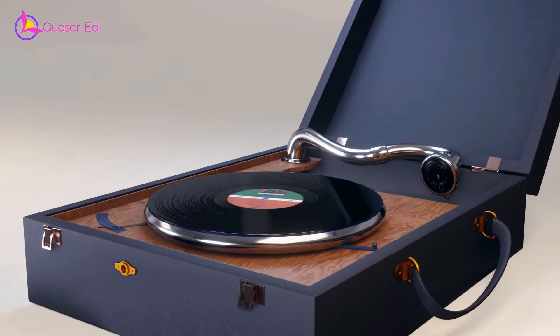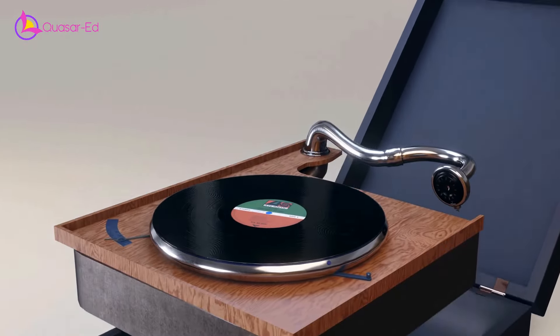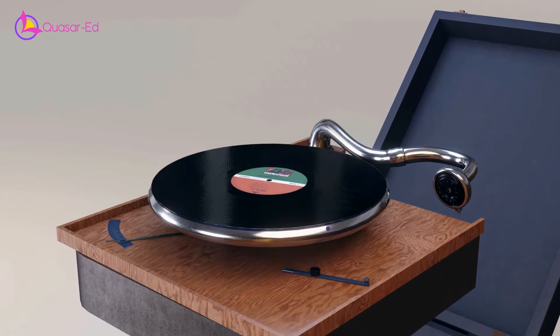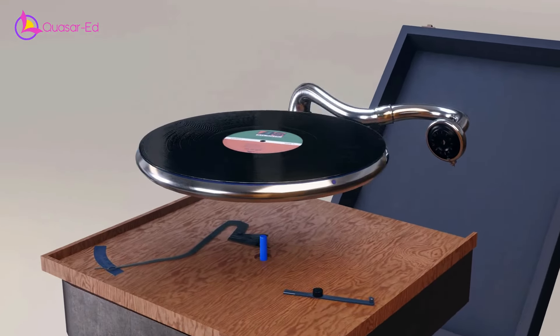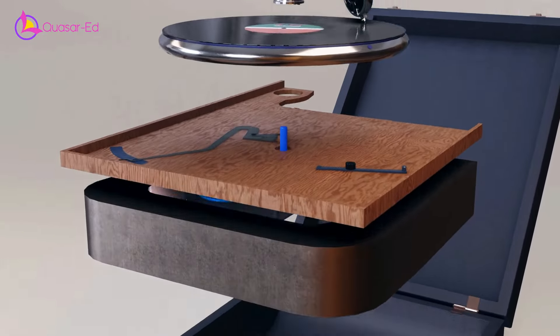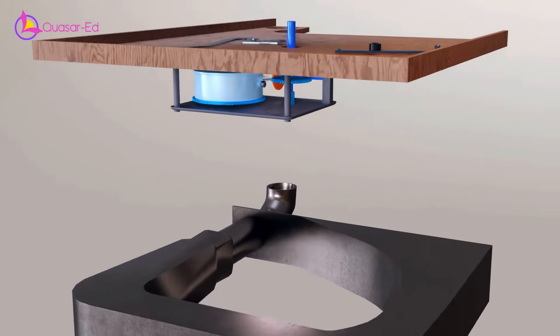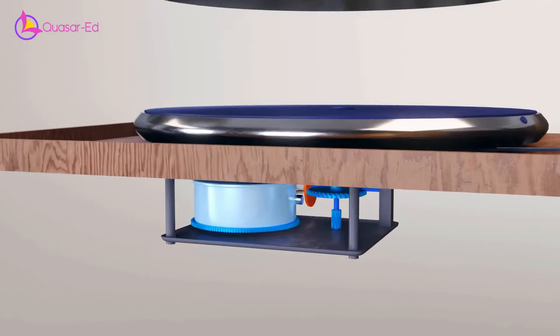We can separate the gramophone into three main sections. The spindle that the record sits on and rotates on, the stylus that moves on the record disc, and the horn assembly that amplifies the sound. These gramophones don't even need electricity and here is why.